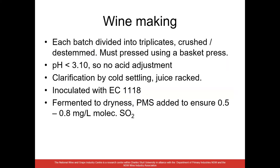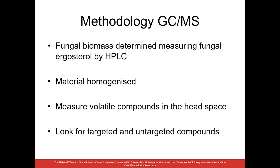Each batch was divided into triplicates, crushed and destemmed. The must was pressed using a hydraulic basket press. pH and total soluble solids were measured throughout — pH in all cases was less than 3.1, so no acid adjustment was made. There was clarification by cold settling and the juice was racked. We then inoculated with Saccharomyces cerevisiae EC1118. The wine fermented to dryness and PMS was added to ensure sufficient molecular sulphur dioxide. Throughout the process, subsamples were taken for chemical analysis.